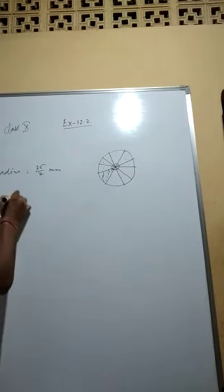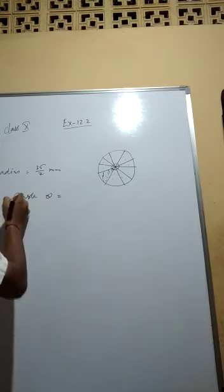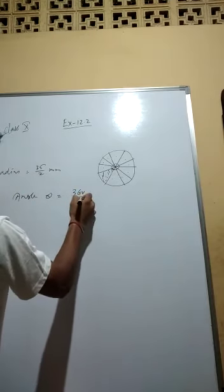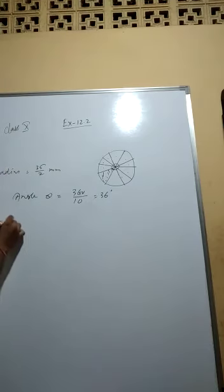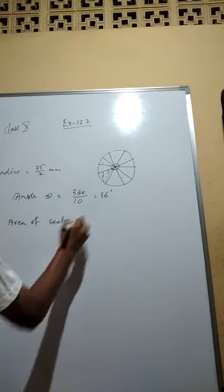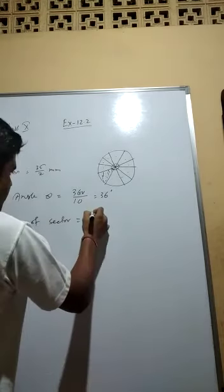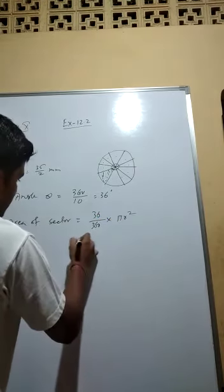So number 2, write the angle theta equal to 360 by 10, that means 36 degrees. So therefore, area of sector making angle 36 degree is equal to theta by 360 into pi r square.